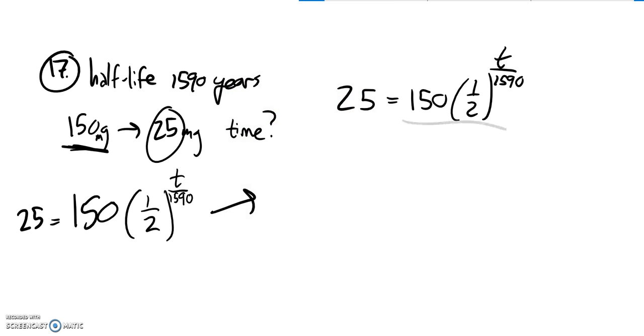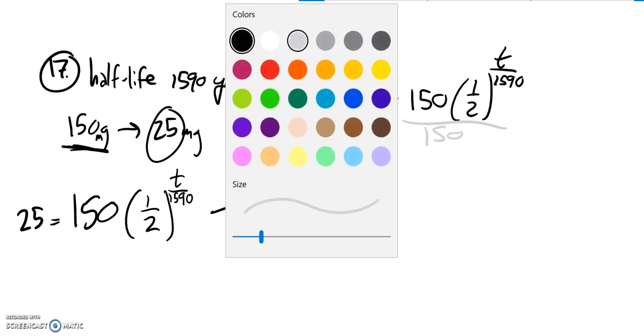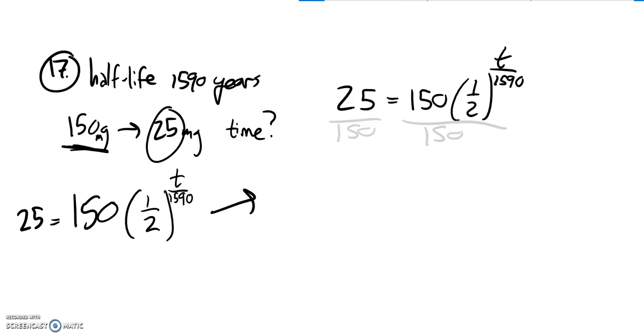As I go to solve this, I'm going to divide both sides by 150. So then I've got 25 divided by 150—that's one-sixth—equals one-half to the t over 1590.